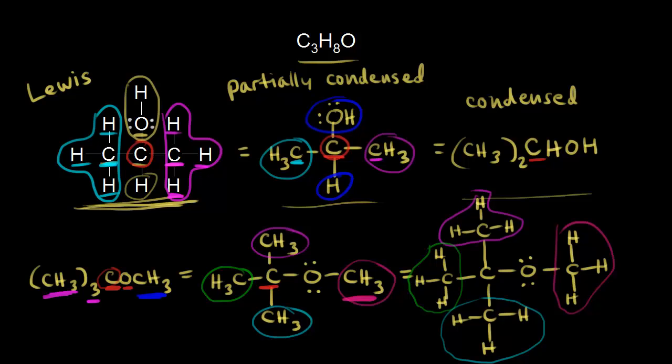That's an important skill — being able to go from a condensed to a partially condensed to a full Lewis dot structure, and also going the opposite direction. These representations are usually only used for small molecules. When you have large molecules, this doesn't work very well, and you'll see almost exclusively bond line structures used to represent larger organic molecules. We'll look at those in the next video.